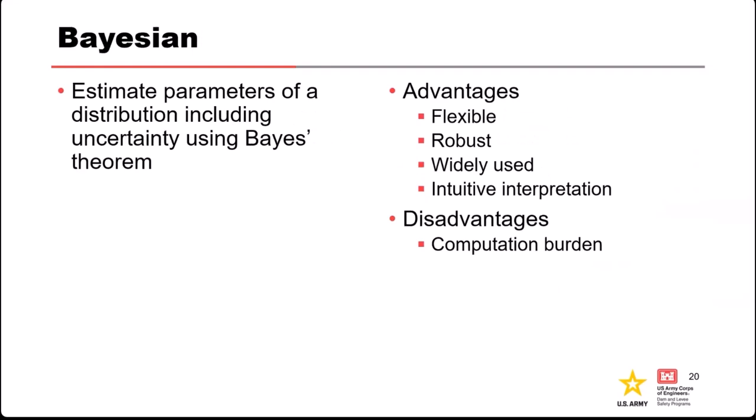Bayesian fitting uses Bayes' theorem to ask: given the data I have, what's my estimated distribution of the parameters I'm fitting? The big disadvantage historically was computational burden. Prior to roughly 20 years ago, Bayesian was rarely used because of the computation power required, which is partly why it hasn't been taught much in standard probability and statistics courses. But there's been a resurgence in Bayesian methods—computers and algorithms have gotten fast enough that computation burden is no longer a challenge. In many fields today it's actually the preferred method.